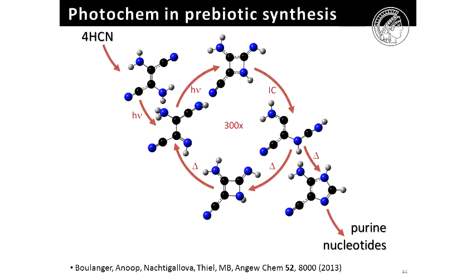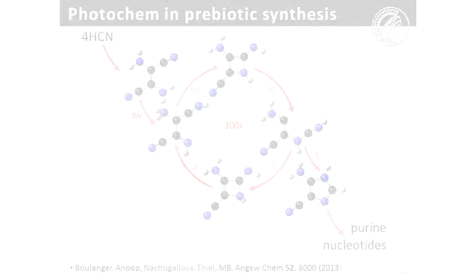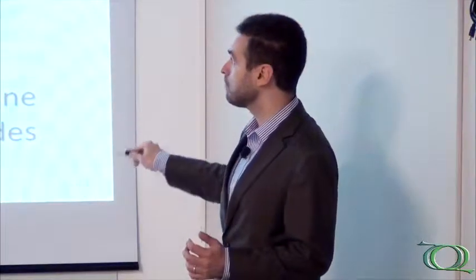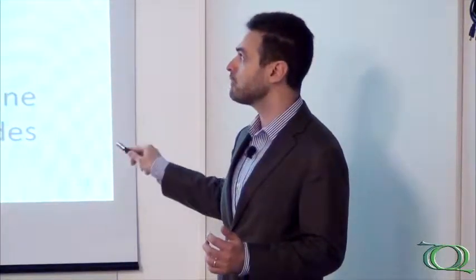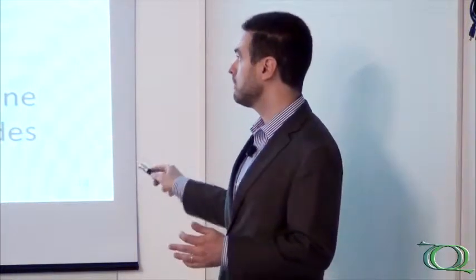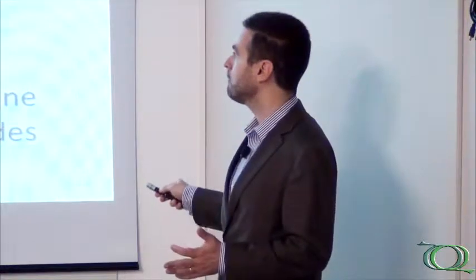You can either form imidazole, that's the final product, or go back to the ground state four-member ring that returns to this intermediate. From the experimental data, you know that this cycle repeats about 300 times, so it takes 300 photons on average until you get the imidazole being formed.